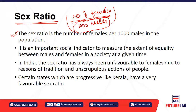In paternalistic societies, people give preference to the male child and consider females a burden, so the sex ratio is very poor or adverse. The sex ratio is an important social indicator which shows the extent of equality between male and female in a society at a given point in time.